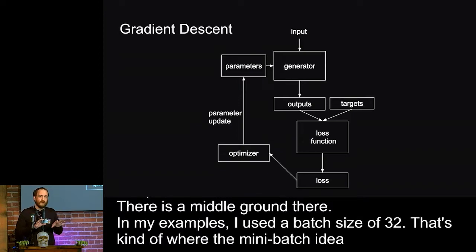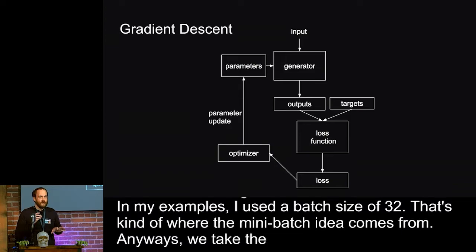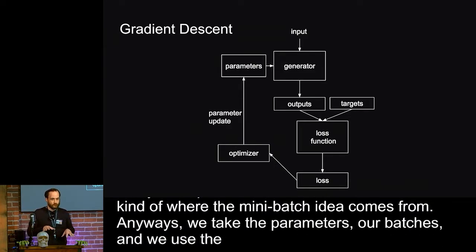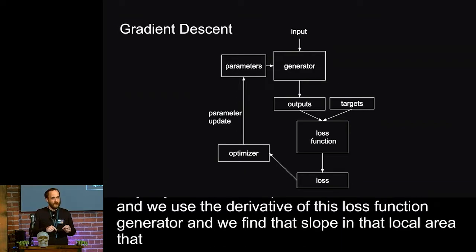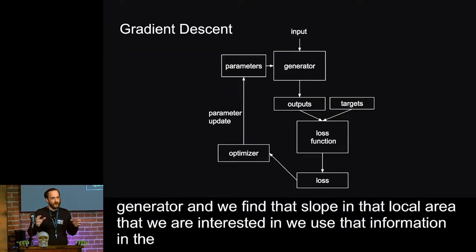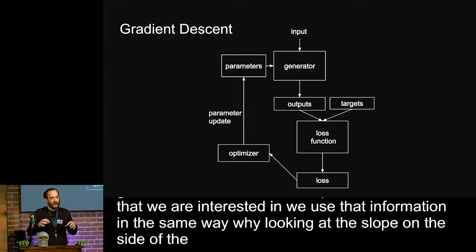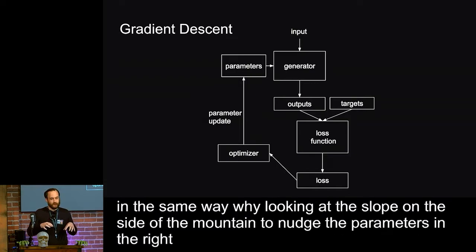Anyways, we take the parameters, our batches, and we use the derivative of this loss function in the generator. We find that slope in that local area that we're interested in. And we use that information the same way we're looking at the slope on the side of the mountain to nudge the parameters in the right way. So we start to converge on magic numbers that tend towards the goals of the loss function.